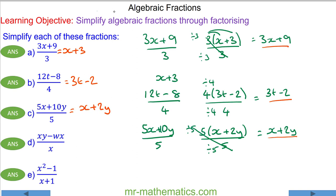And for question d we have xy minus wx over x. And x is the highest common factor of the numerator. We have x times (y minus w) over x, and we can divide both by x.